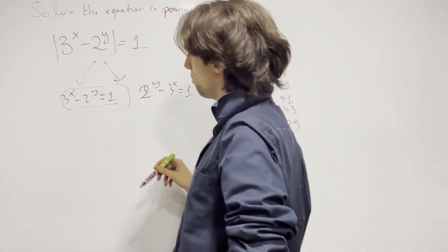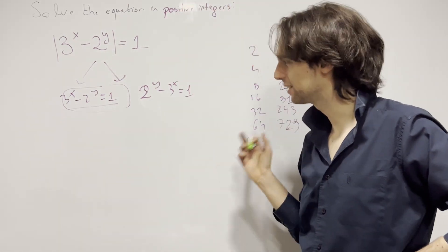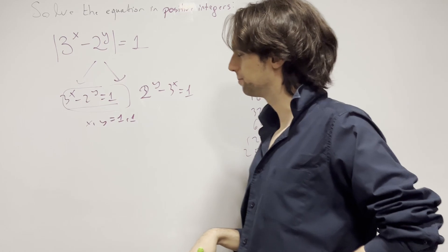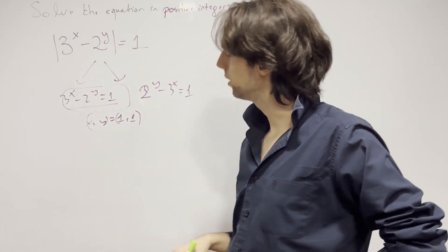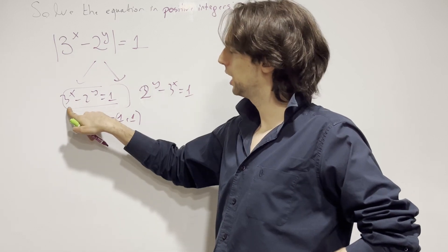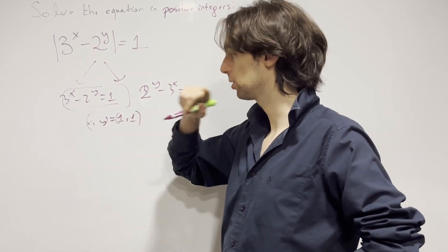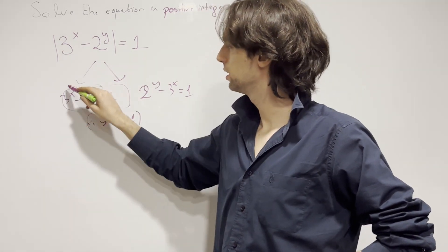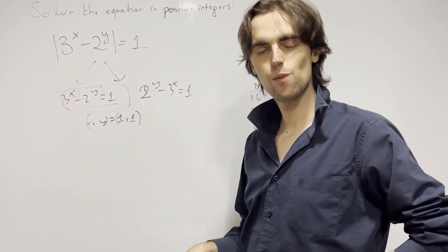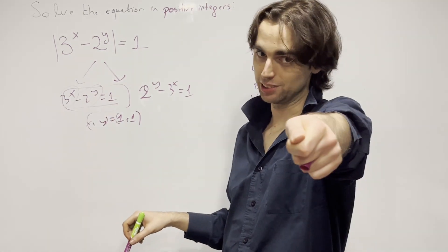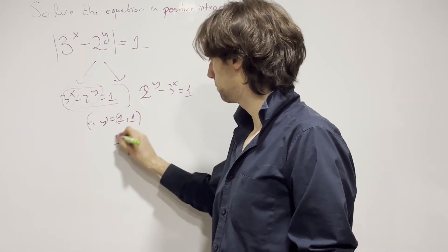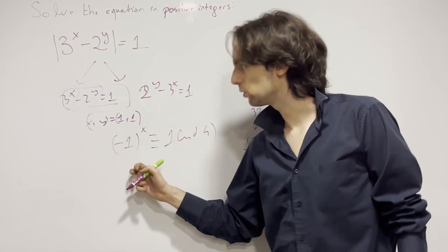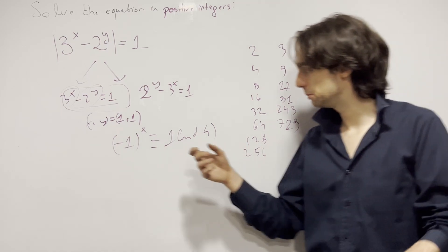Let's look at this case. If y equals 1, we're just done — x equals 1. So (x,y) = (1,1). Now, how do I solve this? If y is greater than or equal to 2, it's divisible by 4. What is its remainder? The remainder of 3 to the x needs to be congruent to 1 modulo 4, which means x is even.